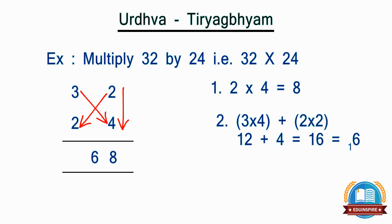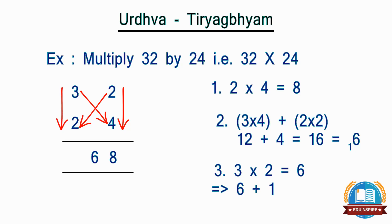Step 3: multiply vertically the leftmost digit, i.e. 3 by 2, which becomes 6, and add the carried over number, i.e. 1, to it. So the total becomes 7. And the answer becomes 7, 6, 8.